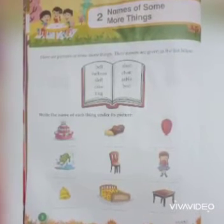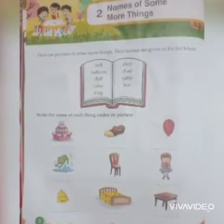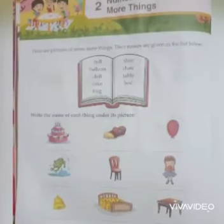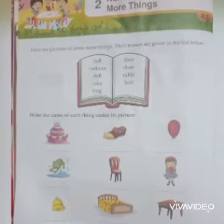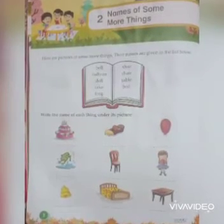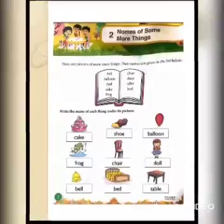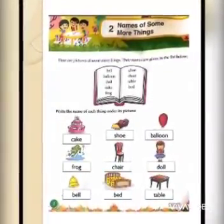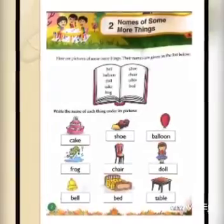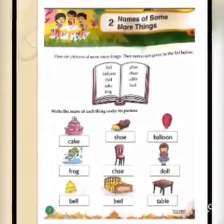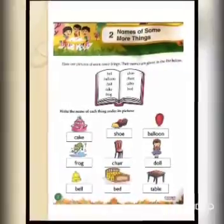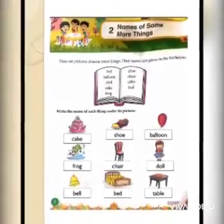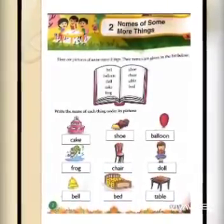Now start writing. Here are some pictures of some more things. Their names are given in the list which are mentioned in the book. You will write the name of each thing under its picture. Now start writing. Number one is cake. Next is shoe. Third one is balloon. Next is frog. Chair. Door. Bell. Bed. Table.